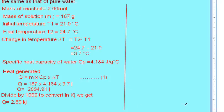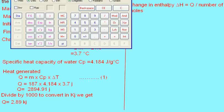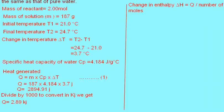Now we have to calculate change in enthalpy. The formula for change in enthalpy is: Delta H equals amount of energy divided by number of moles. Plugging in the values, Delta H equals 2.89 kJ divided by 2 moles. After calculation, Delta H is equal to 1.45 kJ per mole.